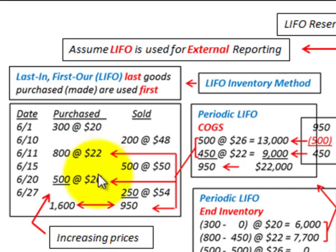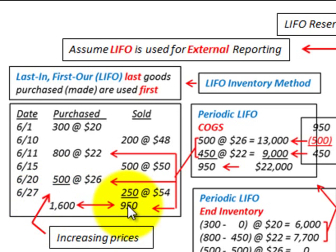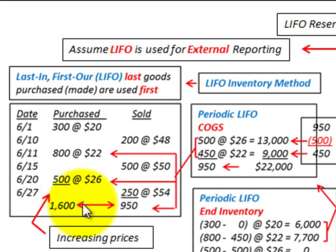For our purchases, we're going to have ascending or increasing prices. As far as our inventory is concerned, we're going to have sold 950 units, and there was a purchased amount of 1,600 units. So there's going to be some ending inventory.